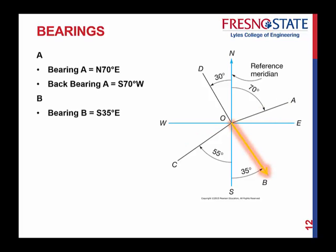Point B: measuring the angle from the reference meridian of due south, 35 degrees is the magnitude. Because it falls in quadrant 2, direction is southeast: south 35 degrees east. Back bearing — opposite direction, northwest. Since this angle is 35 degrees, this angle is also 35 degrees. Same magnitude, just opposite direction to calculate your back bearing.